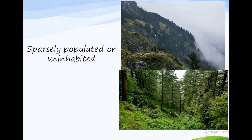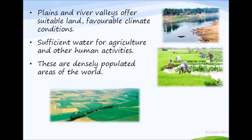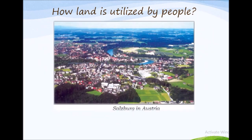On the other hand, plains and river valleys offer suitable land, favorable climate conditions, and sufficient water for agriculture and other human activities. That is why these are densely populated areas of the world — a lot of people live in groups and communities in these areas. Now let's see how land is utilized or used by people.